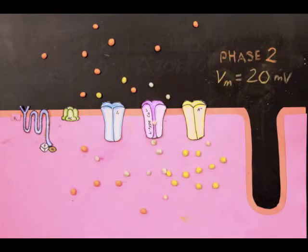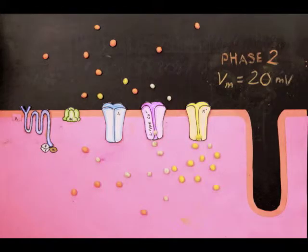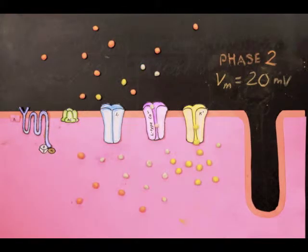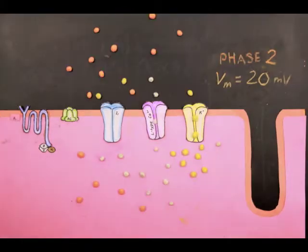At around 20 mV, the membrane reaches maximum depolarization and potassium channels open, allowing potassium to flow outwards. The simultaneous influx of calcium and outflow of potassium causes the membrane potential to stabilize. This is the calcium plateau.